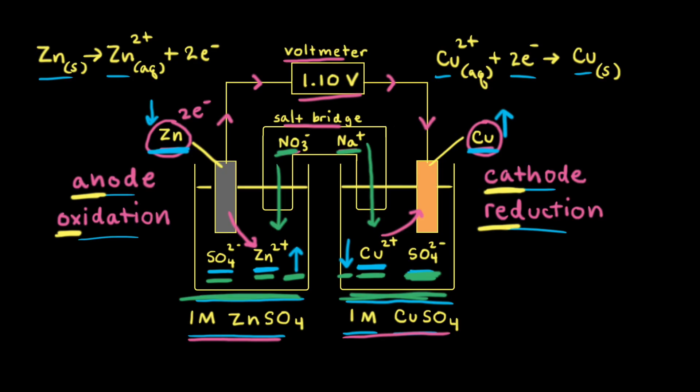However, this thermodynamically favorable redox reaction doesn't last forever. Eventually the reaction reaches equilibrium, and at that point the voltage is equal to zero. When the voltage goes to zero, the current also goes to zero, which means electrons are no longer moving in the wire. You could also call a galvanic or voltaic cell a battery — at that point, the battery is dead.